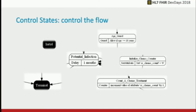There are two types of states. One is control states — these control what happens to a patient and where they go through the system. There's an initial state — everyone starts at an initial state. There's a terminal state, which does not mean the patient is dead — it means that particular module ends. There are also delay states, guard states which wait until something happens, ways to set attributes on people, and counters. So if you want to make sure certain things happen exactly three times or whatever, you can control the flow.